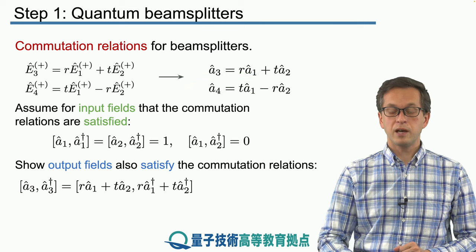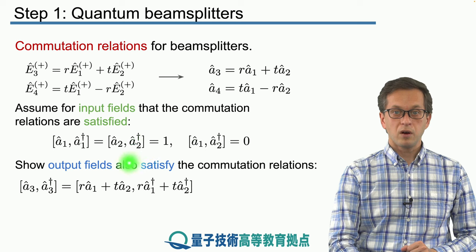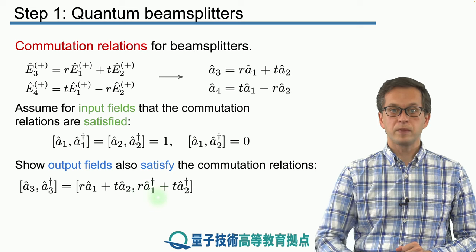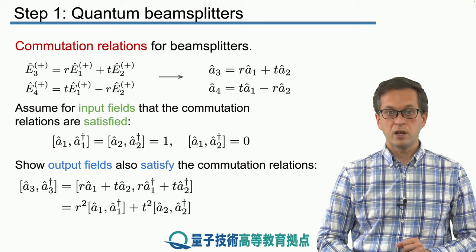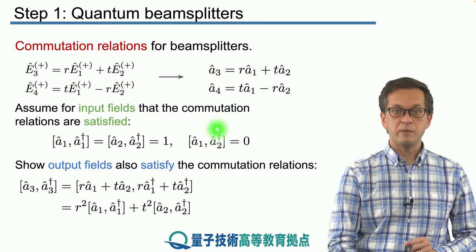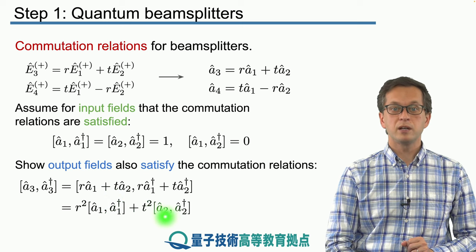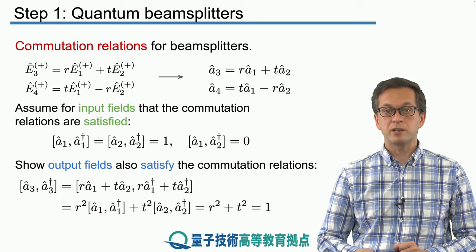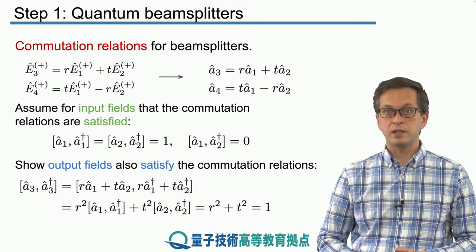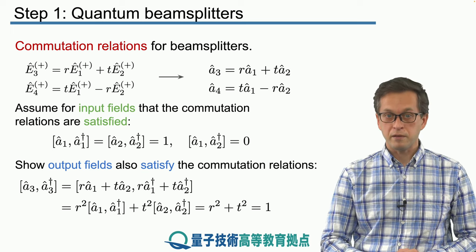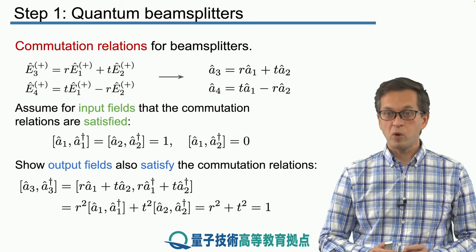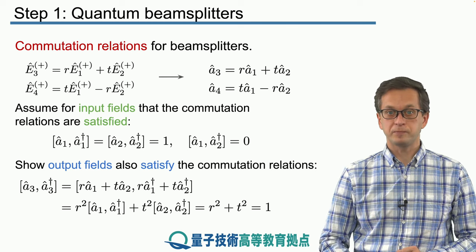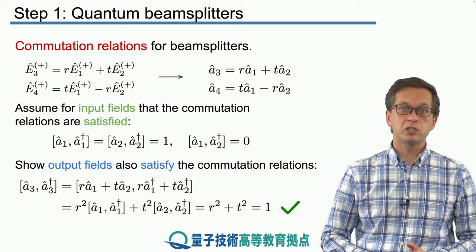We assume that the input fields satisfy the usual commutation relations: the commutator of A1 and A1-dagger equals 1, same for mode 2, and the different modes commute. Substituting into the commutator of A3 with A3-dagger, the cross terms — A1 with A2-dagger and A2 with A1-dagger — are zero. What remains is R squared times the commutator of A1 and A1-dagger, plus T squared times the commutator of A2 and A2-dagger, which gives R squared plus T squared. Since R squared plus T squared equals 1, the commutator of A3 and A3-dagger is 1 — the correct result. So our transformation matrix S is physical and correct, and similarly one can show it for A4.